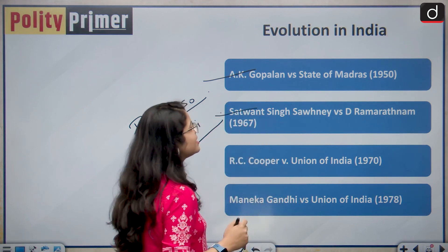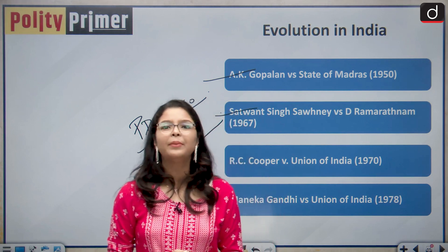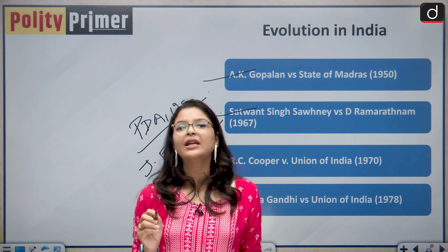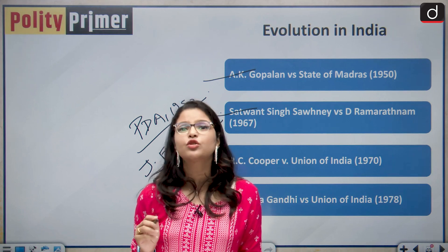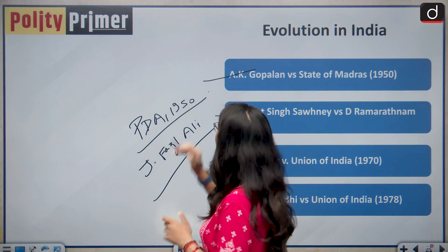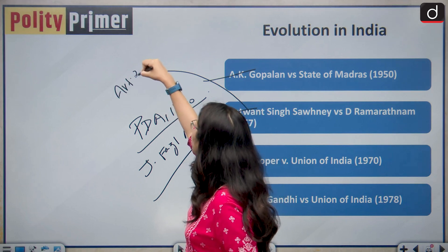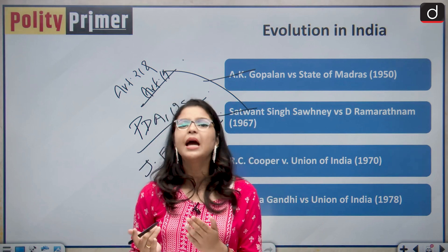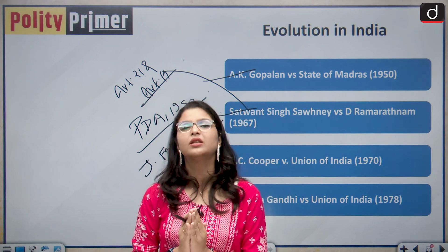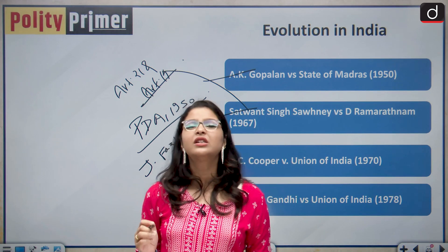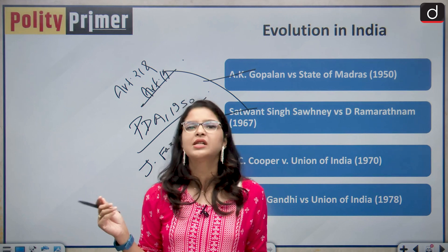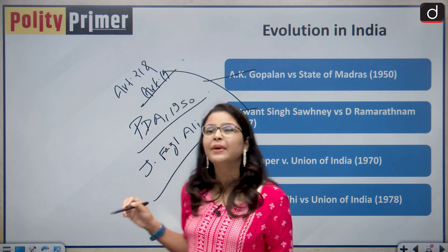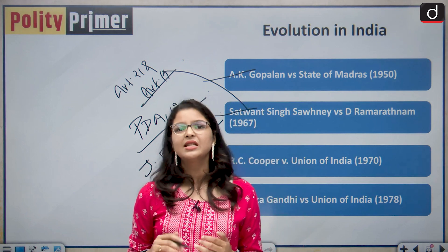Then came the case of Satwant Singh Sawhney versus D. Ramaratnam. The Supreme Court shifted its approach from strict procedure established by law and interpreted that Article 21 must be read together with Article 14. The Supreme Court established that the procedure must be reasonable and just — you cannot merely say the procedure was strictly followed to justify violation of personal liberty and right to life; it must also be examined on the touchstone of Article 14.